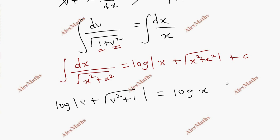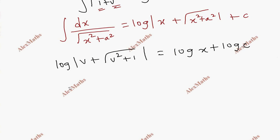Formula applied: log of mod v plus root of v squared plus 1. This is log x. This is log a, log x, and that is log x. With constant c equals log c, so log of v plus root v squared plus 1 equals to log x times c.